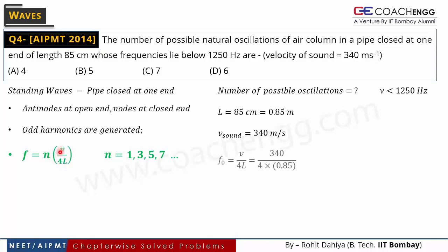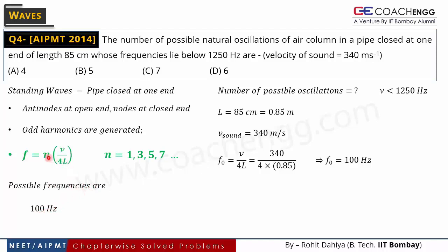The fundamental frequency F0 = V/4L = 340 / (4 × 0.85) = 100 Hz. So the smallest frequency created is 100 Hz. The possible frequencies are: 100 × 1 = 100 Hz (fundamental), 100 × 3 = 300 Hz (3rd harmonic), 100 × 5 = 500 Hz (5th harmonic), 100 × 7 = 700 Hz (7th harmonic), and continuing: 900 Hz, 1100 Hz, 1300 Hz...